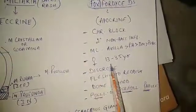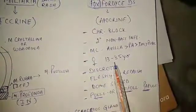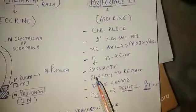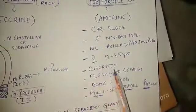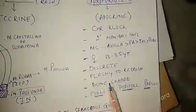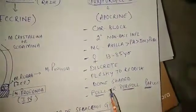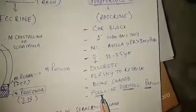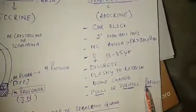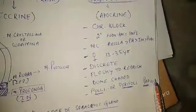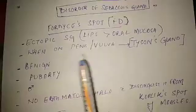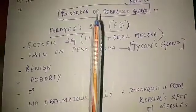Fox-Fordyce disease typically affects females, and the age group is usually 13 to 35 years. The lesion is usually discrete, and the color is flesh to reddish in color. It is dome-shaped and can present in the region of the follicle and perifollicular area, presenting as papules.